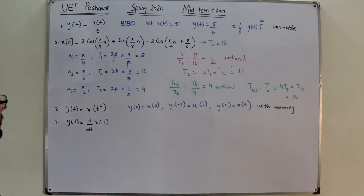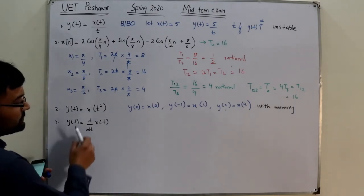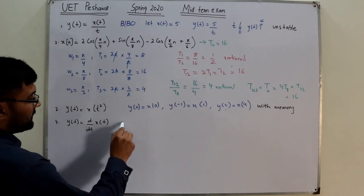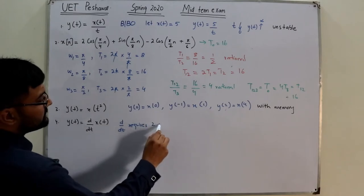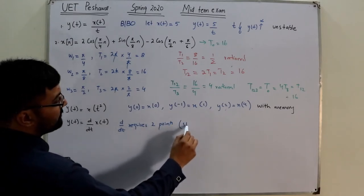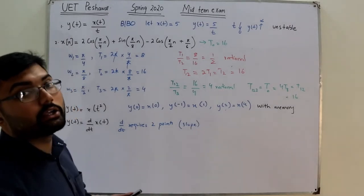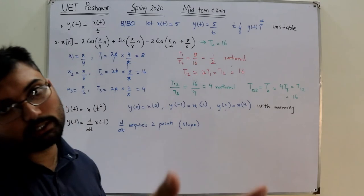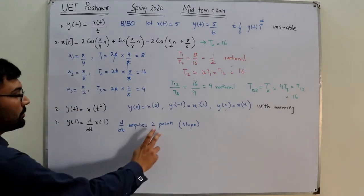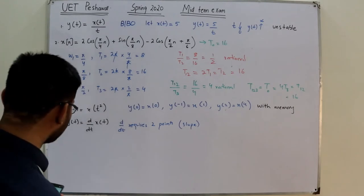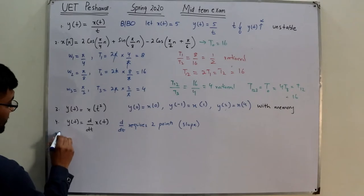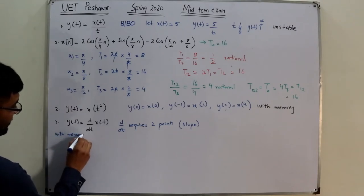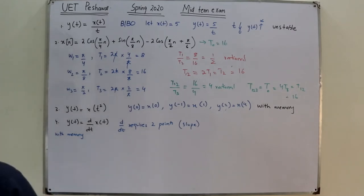For memory: computing a derivative requires two points because it is a slope, and a slope cannot be found from a single point alone. You need either a past or future point along with the present point. Therefore this is a with-memory system.